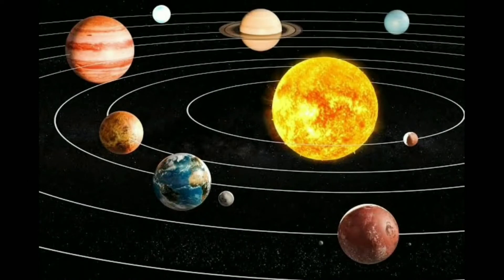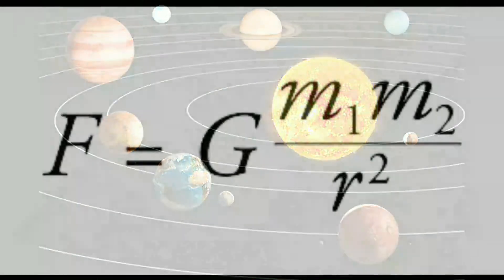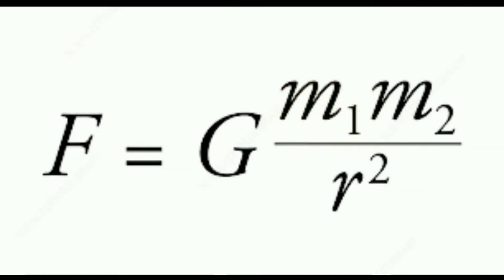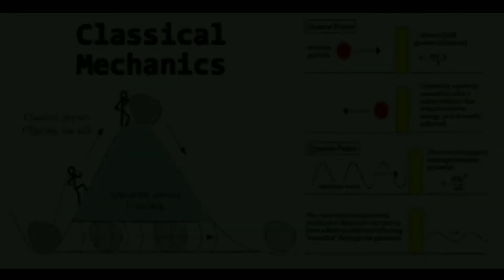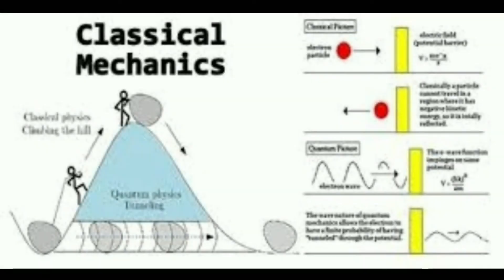In Newton's Principia, his theories of gravity help to understand the motion of the Earth, Moon, and other planets around the Sun. Today this is known as Newton's law of universal gravitation. Newton's laws of motion are known as the fundamental laws of physics and laid the foundation of the branch of physics called classical mechanics.